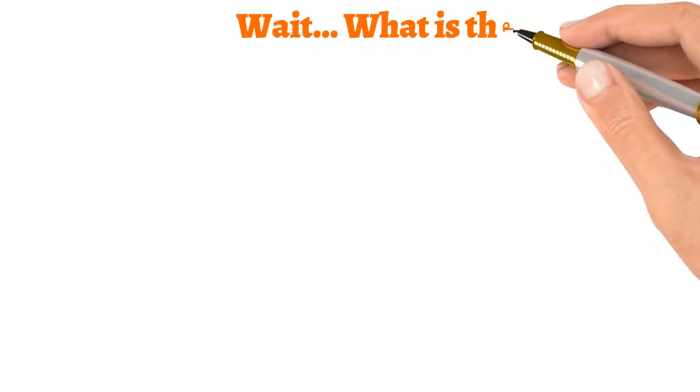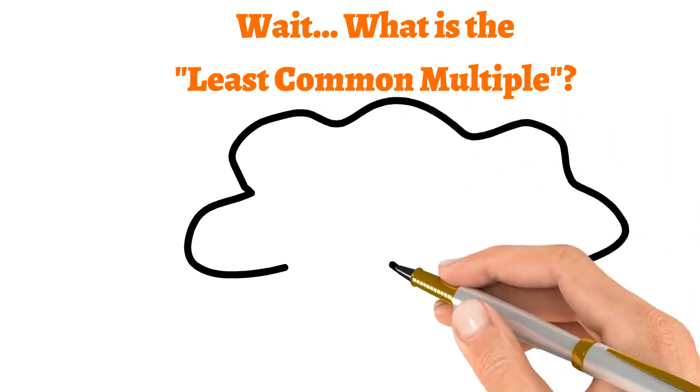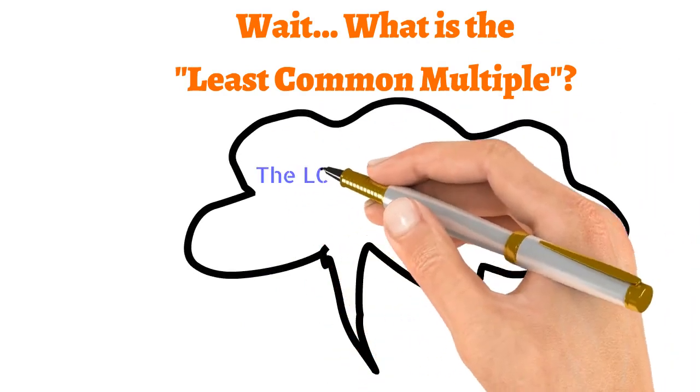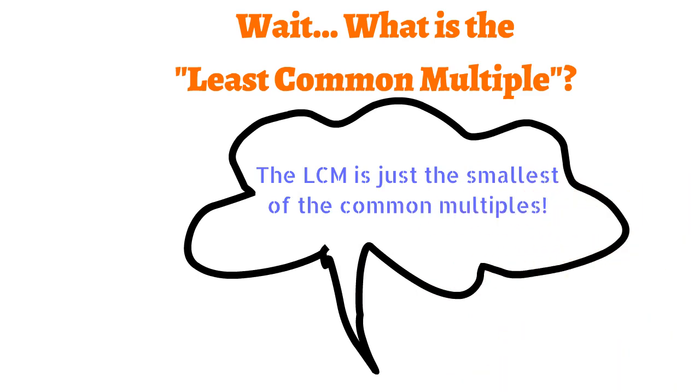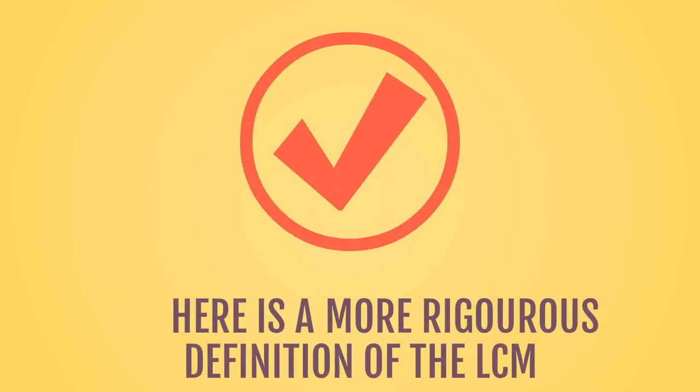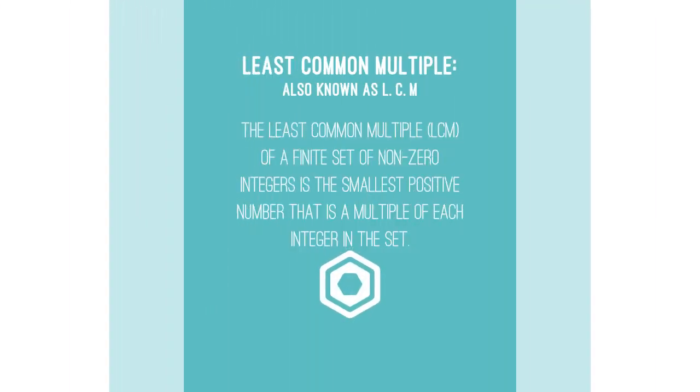Wait, what is the least common multiple? The LCM or the least common multiple is just the smallest of the common multiples. Here is a more rigorous definition of the LCM. The least common multiple, also known as the LCM, of a finite set of non-zero integers is the smallest positive number that is the multiple of each integer in the set.